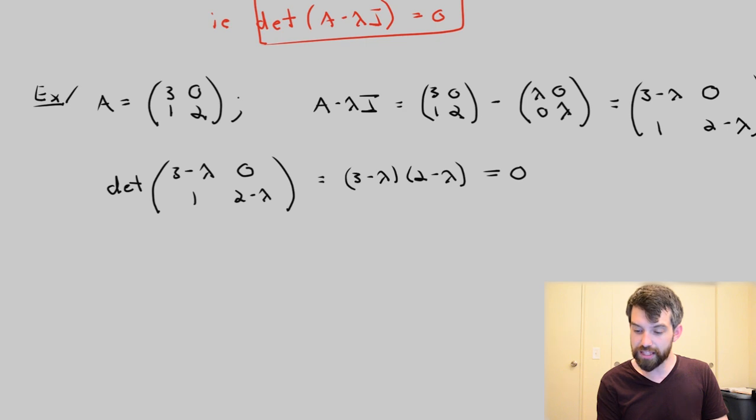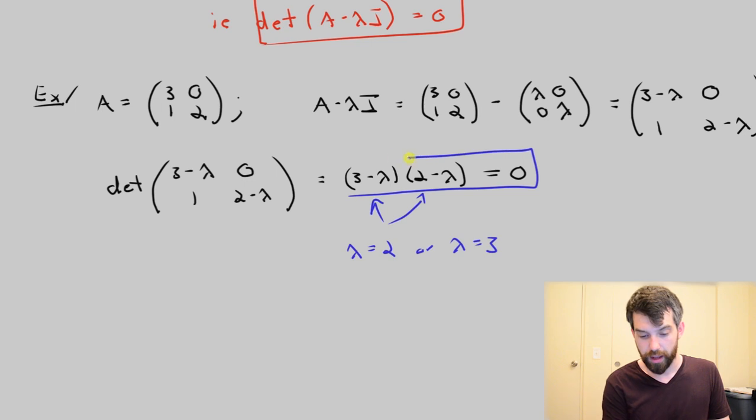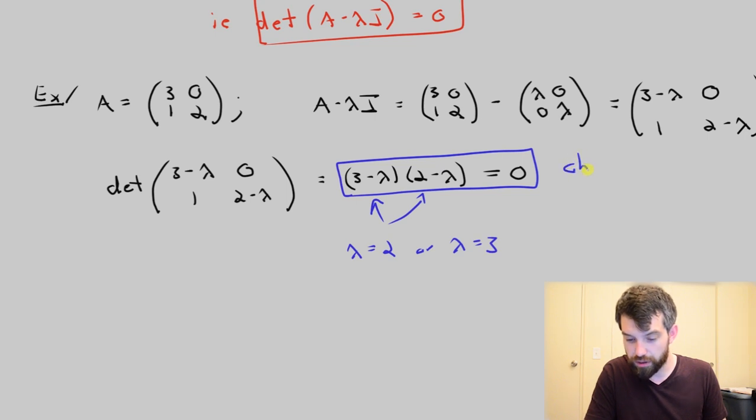And what we are asserting here is that this determinant is equal to 0. And I've chosen a nice simple example where that means there's only two different possible roots to this equation. It means that my lambda is equal to 2, or it means that my lambda is equal to 3. This equation that we have down here, where we've taken the determinant of A minus lambda I and we've set it equal to 0, is often referred to as the characteristic equation.